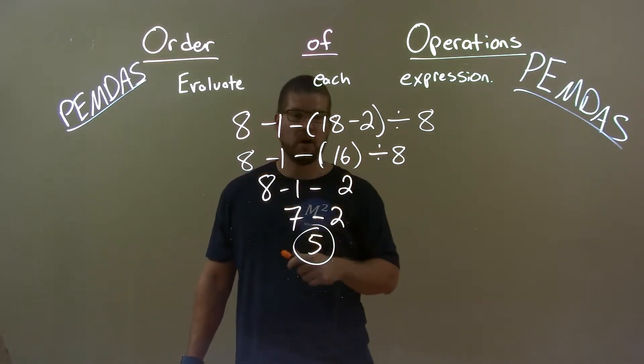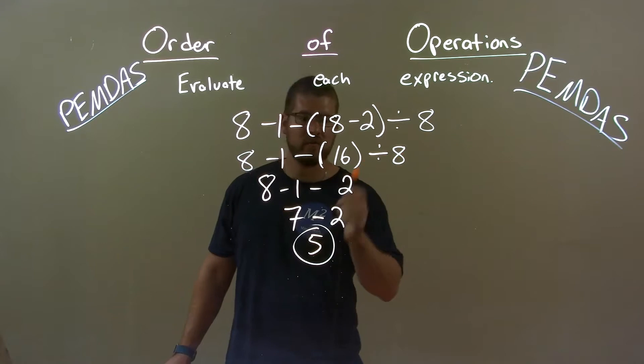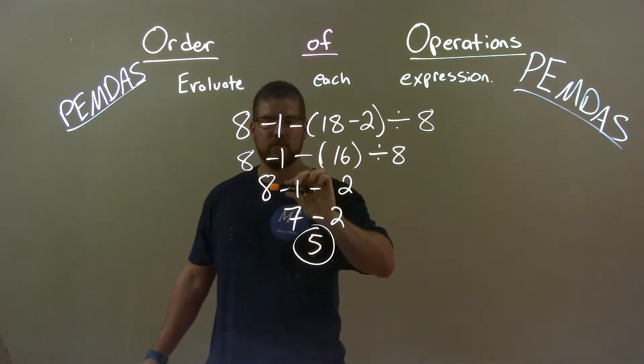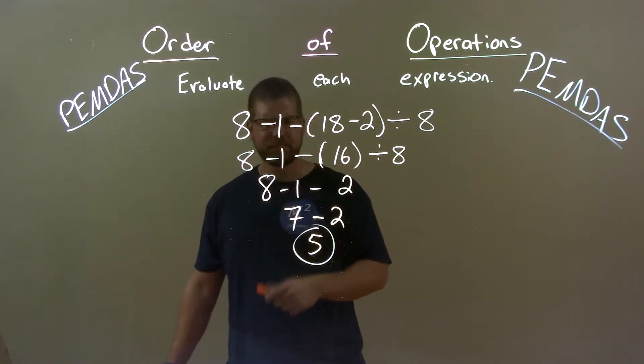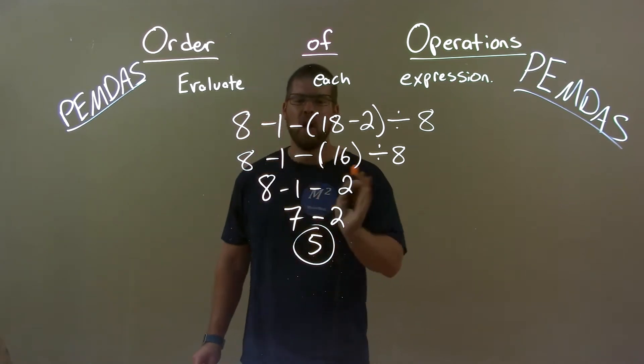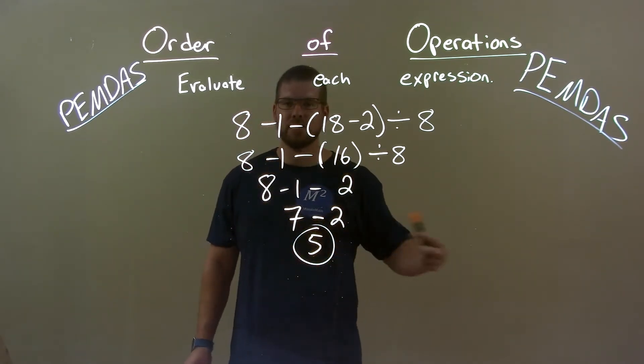Division is the next top dog here. 16 divided by 8 is 2. So we got 2 here. Bring down the subtractions and 8 and then 1. 8 minus 1 minus 2. All these now are subtractions.